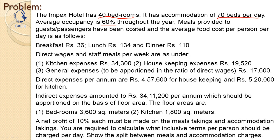Meals provided to guest passengers have been costed and the average food cost per person per day is as follows: breakfast is 36 rupees, lunch is 134 rupees, and dinner is 110 rupees. This is cost per person per day, which is clearly mentioned. This is a very important part of the calculation — it will be helpful when calculating the total meal cost.